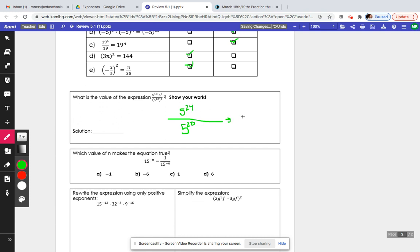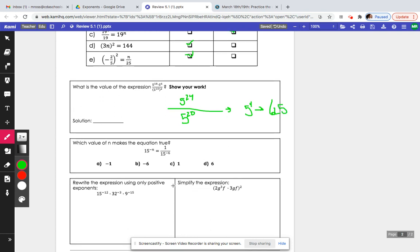This can simplify down to 5 to the 4, which then, in return, can simplify down to 625. Sorry, that's a horrible 625, but you get the idea.